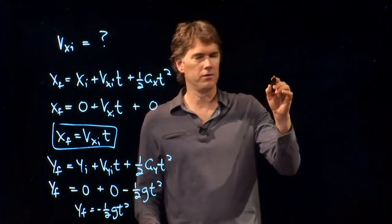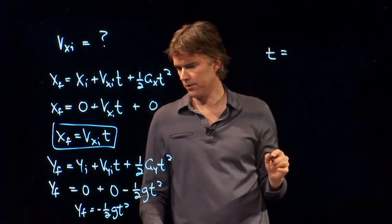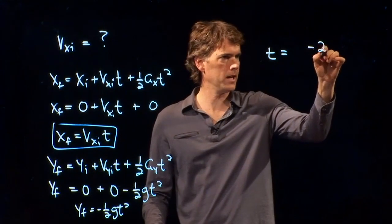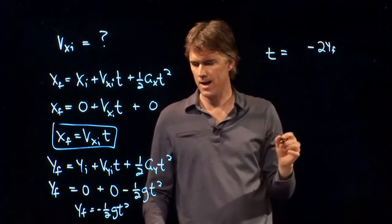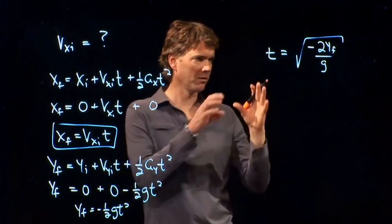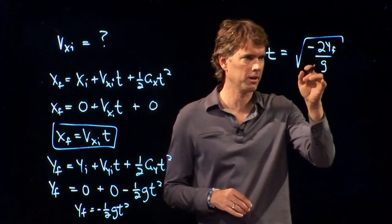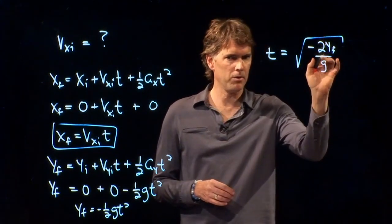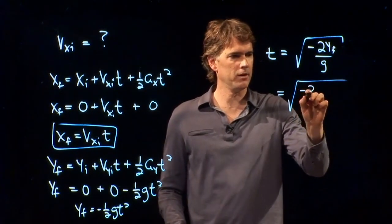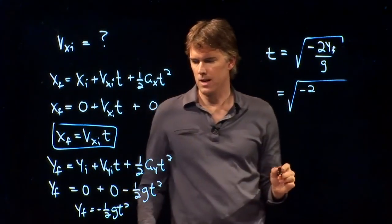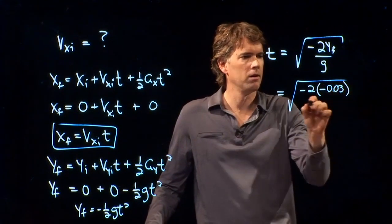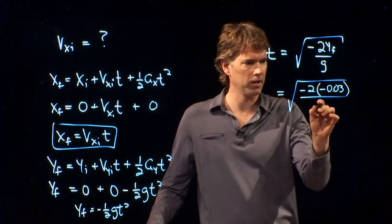y_f = -(1/2)gt². Let's see if we can solve this thing for t. We have to multiply across by 2, it's actually a negative 2, right? So we have t = √(-2y_f/g). And we're going to take the square root of that. And you're a little concerned at this point because there's a negative sign in there, but we remember that y_f is also a negative number.